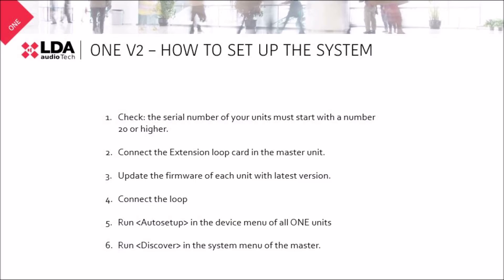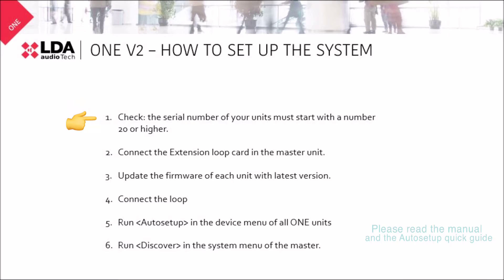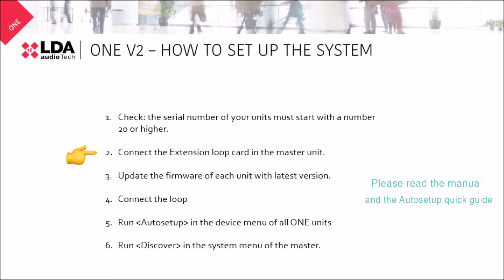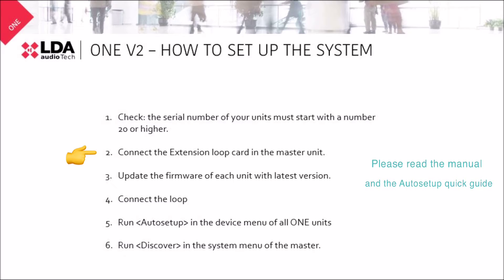That looks really good, but what do we need to do to set up the system? First of all, you will need to double check if the serial number of your units starts with a number 20 or higher. Second, connect the extension loop card in the master unit. Please double check the model of your extension card — it can be of up to 4 units or up to 10 units.